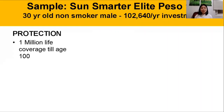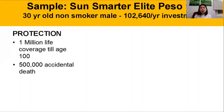In terms of protection — remember, there are two components: the protection and the earning component. In terms of protection, this person would be able to enjoy ₱1 million life coverage until age 100, well beyond life expectancy. There's already a safety net for the family. On top of that, in case of death due to accident, an additional ₱500,000 can go to the family if you avail of this additional rider.